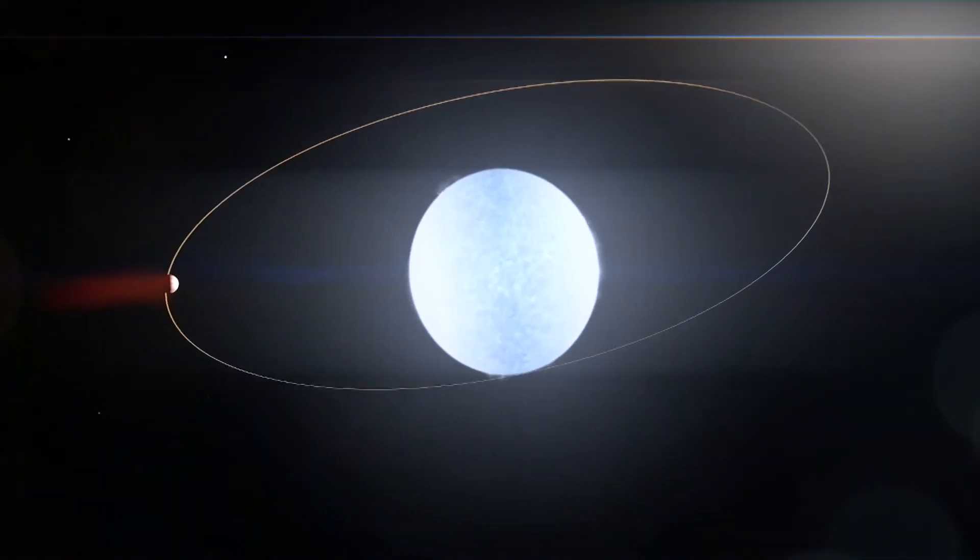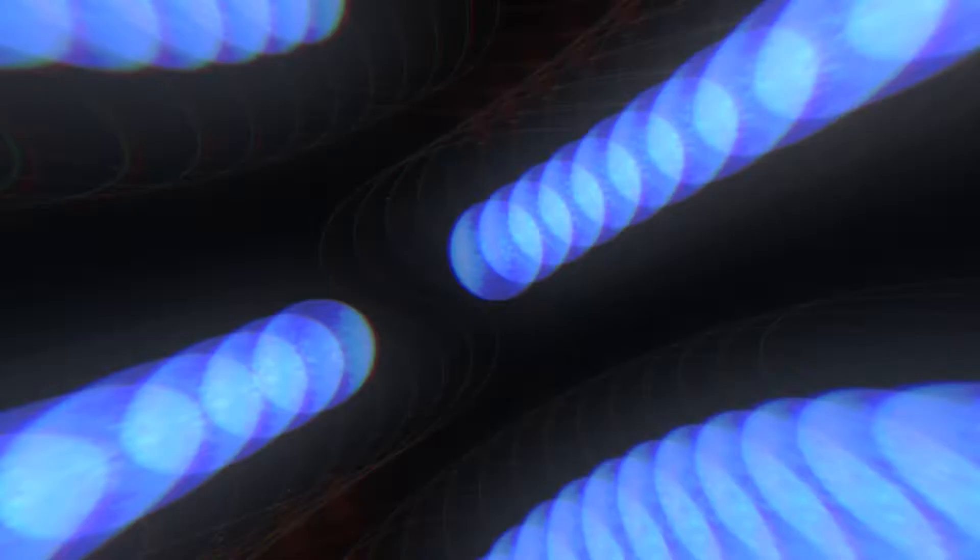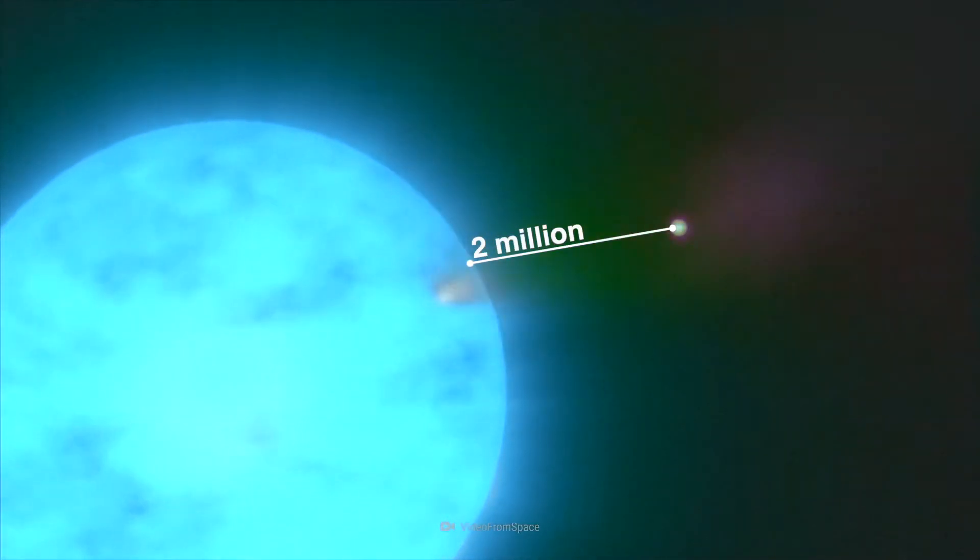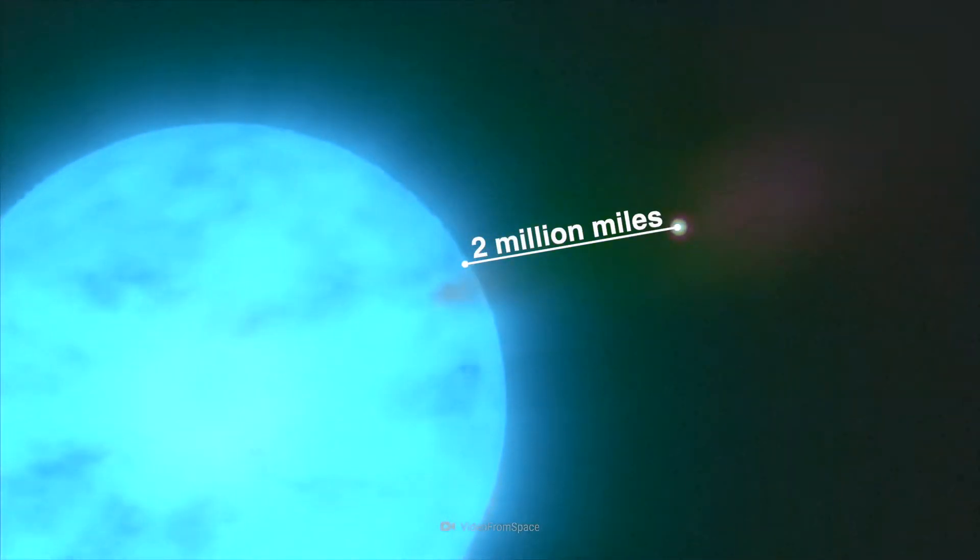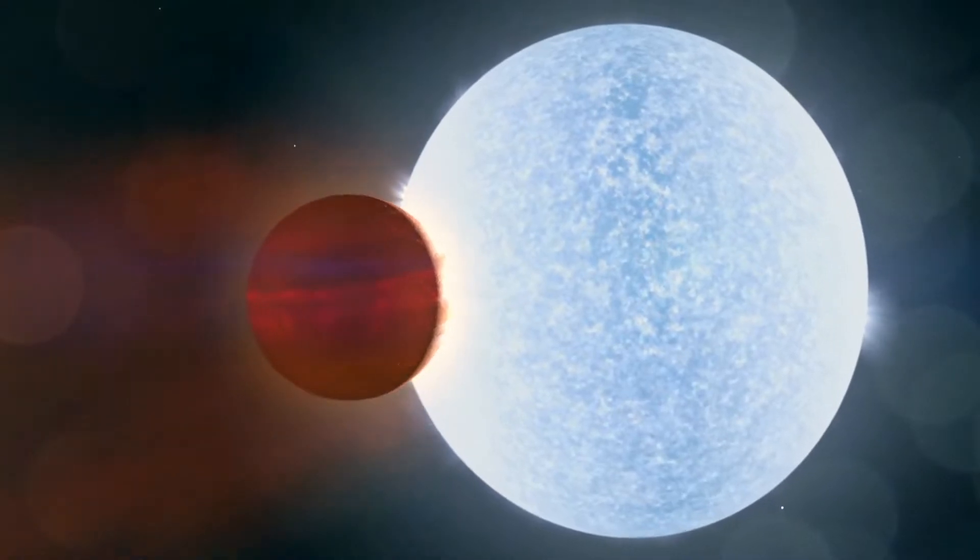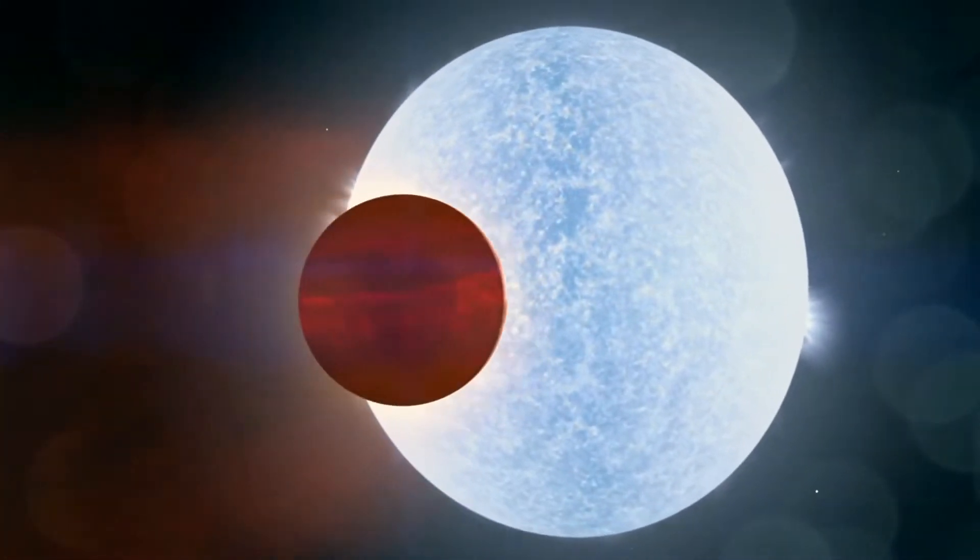But because the star itself has a radius of more than 1 million miles, Kelt 9b circles a mere 2 million miles above the surface of its star. At that distance, it is able to complete a full orbit in less than one and a half days.